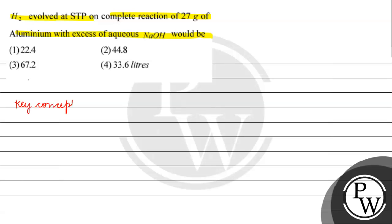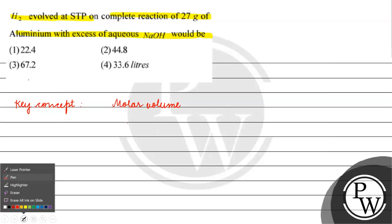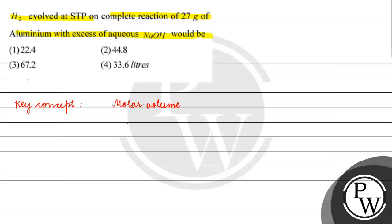The key concept for this question is: the volume of any gas at STP — also called molar volume — is equal to 22.4 liters. Molar volume is the volume of one mole of any gas at STP.